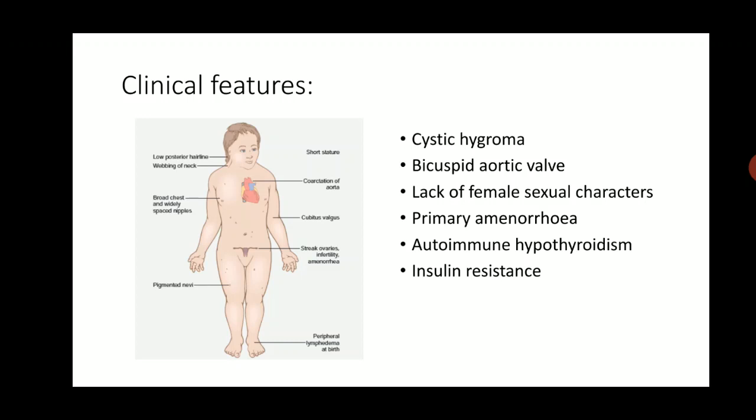Patients may develop autoimmune hypothyroidism or insulin resistance. These patients are usually raised as females, but at puberty they do not develop secondary female sexual characteristics — that is how the disease comes to notice. They present with the typical picture of short stature, webbing of neck, primary amenorrhea, and non-development of secondary sexual characteristics, which prompts suspicion of Turner syndrome.